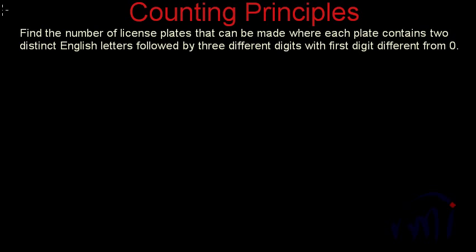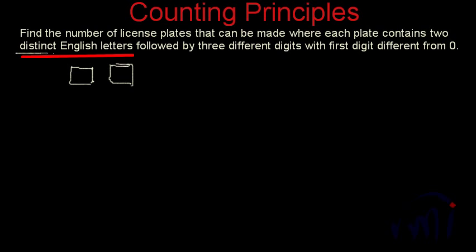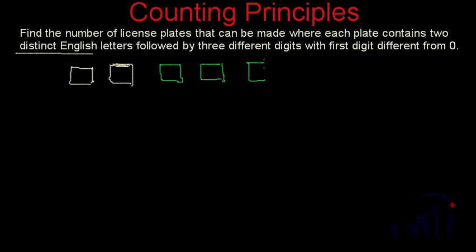So what do we have? We have two places for English letters, and the condition is these two have to be different — two distinct English letters. And after this we have three places for digits, and these three digits also have to be distinct.